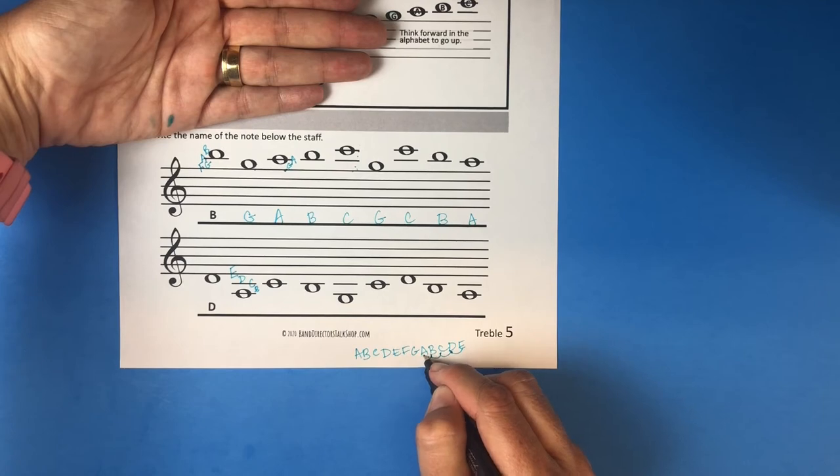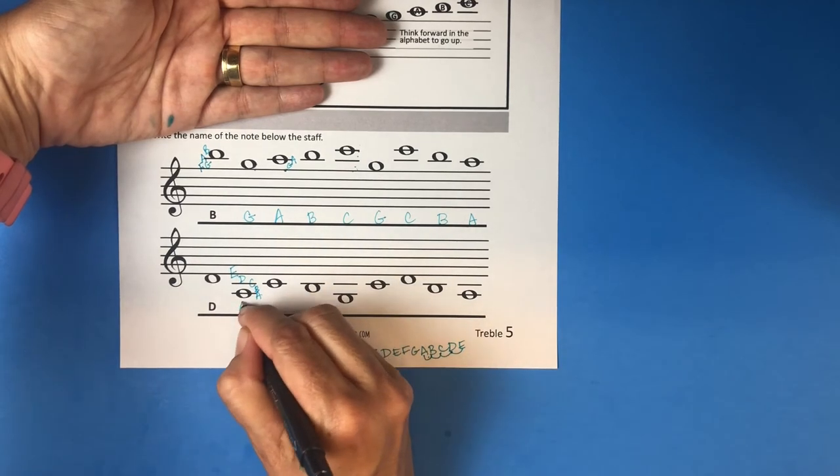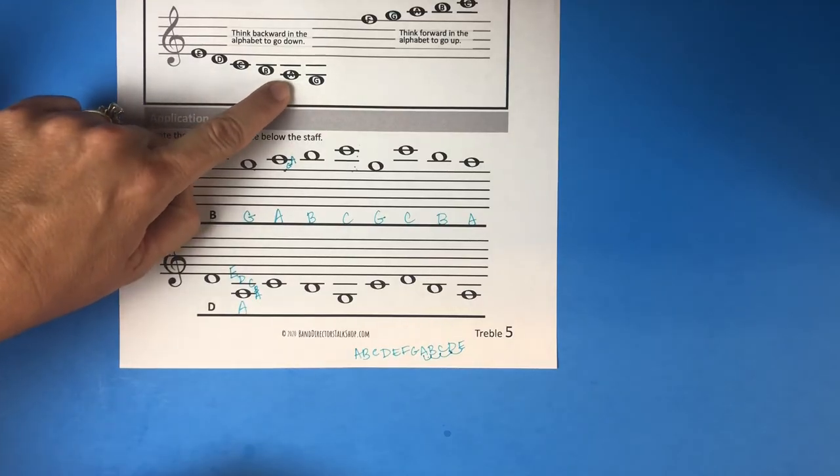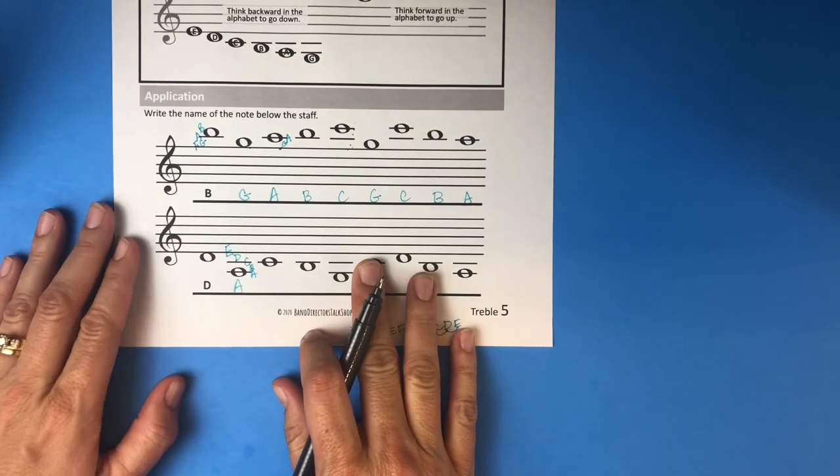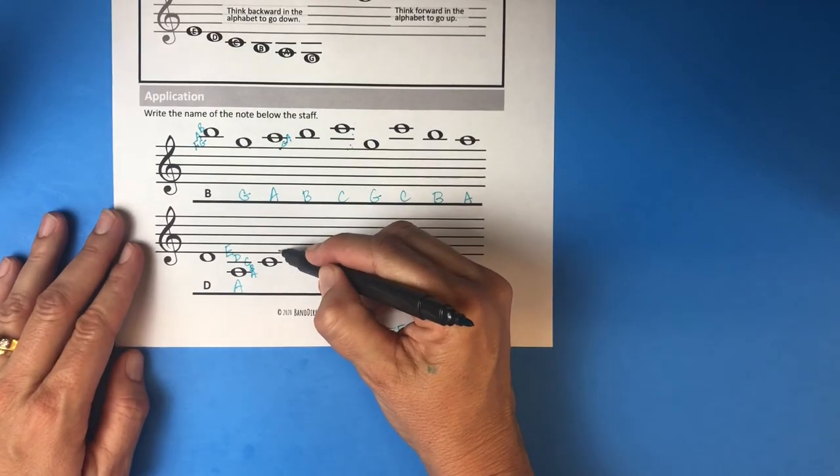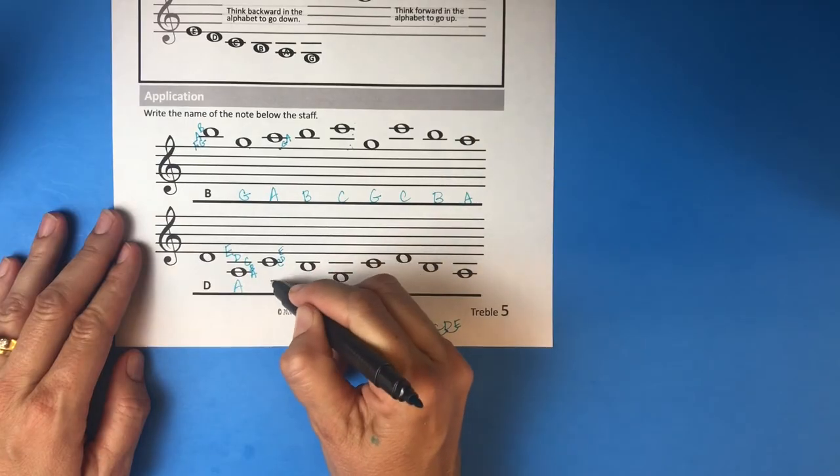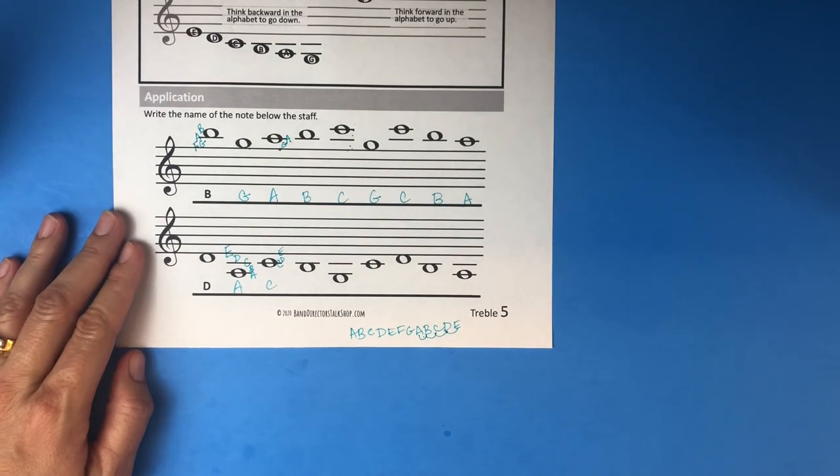So that's an A, and then you can check - the second ledger line below the staff is an A, that's correct. Then here you've got your E, you go backwards in your alphabet - D. And one more to the line is C, so that's a C. Why don't you pause and go and finish it out on your own.